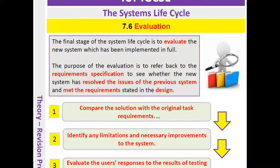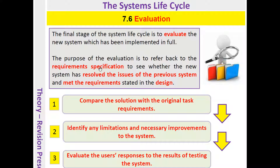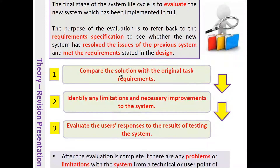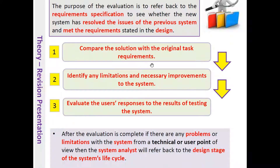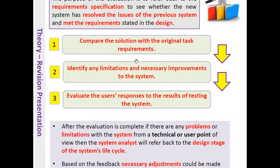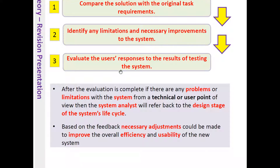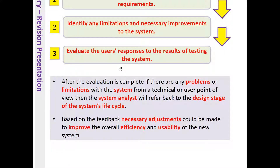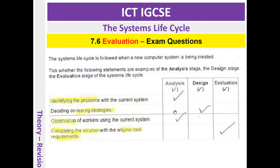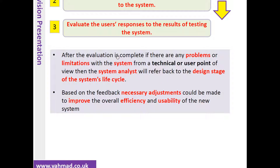At the end there's an evaluation. The final stage of the system's life cycle is to evaluate the new system which has been implemented in full. The purpose of evaluation is to check or refer back to the requirement specification to see whether the new system has resolved the issues of the previous system and met the requirements stated in the design. We can compare the solution with the original task requirements, identify any limitations and necessary improvements, and evaluate the user's response and test results. After evaluation, if there are any problems from a technical or user point of view, the system's analysis will refer back to the design stage, and adjustments can be made to improve the efficiency and usability of the new system.